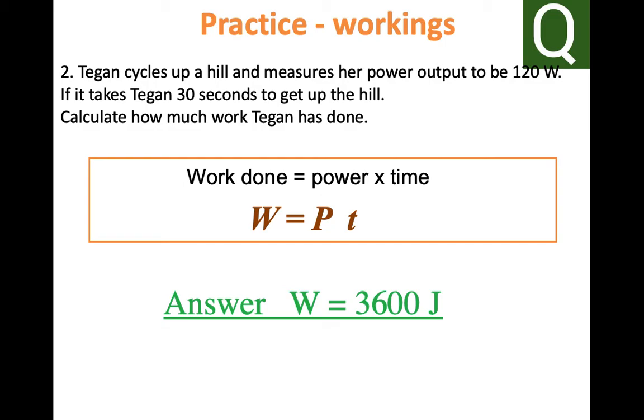Time is measured in seconds, power is measured in watts, so you're doing 120 times 30, which should give you 3600 joules.